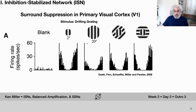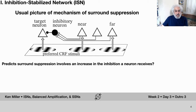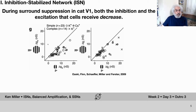Surround suppression depends on the center and surround orientations being matched. The usual picture is that the surround stimulus is stimulating neurons in visual cortex that are millimeters away from the neuron being driven by the center stimulus. Over that distance, the main connections are excitatory. So the belief is that excitatory projections from those surrounding regions project into the local region you're recording from, and since they cause suppression, they must be primarily driving inhibitory neurons. Naively, this would predict surround suppression involves an increase in the inhibition a neuron receives.